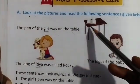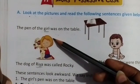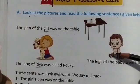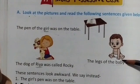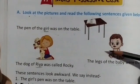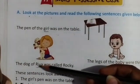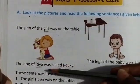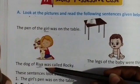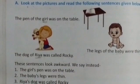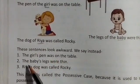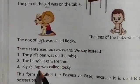The pen belongs to the girl because the girl's pen is on the table. Baby's feet means the feet of the baby — kiska pares? Baby ka. Ria's dog means the dog belonging to Ria — kis ka dog hai? Ria ka. Isliye kisko belong kar rahi hai — Ria ko. Now look at these sentences.